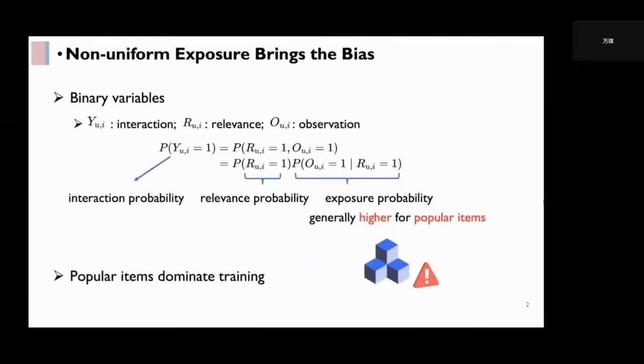Here we formalize how the exposure mechanism brings the bias into observational data. First, we introduce three binary variables: the interaction YUI, the relevance RUI, and the observation OUI.